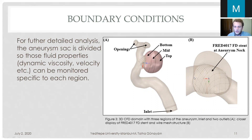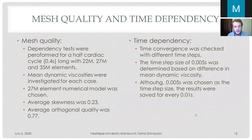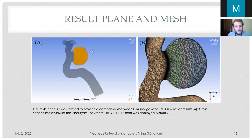Mesh dependency and time dependency tests were also conducted. The maximum mean dynamic viscosity difference was investigated, and a 27-million-element numerical model was chosen because its maximum mean dynamic viscosity difference was less than 5% compared to the 35-million-element model. For time dependency, 0.005 seconds was chosen as the time step size. The result plane is shown on the left — all results such as velocity plots and dynamic viscosity plots will be displayed on this plane, which is identical to the digital subtraction angiography image plane. On the right, a closer look at the mesh and the FRED-4017 flow diverter stent is shown.